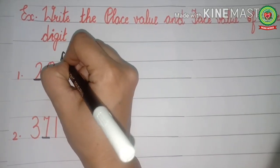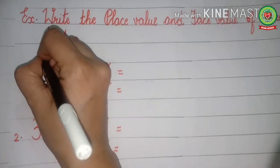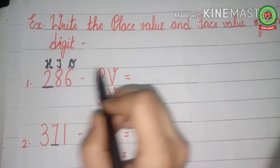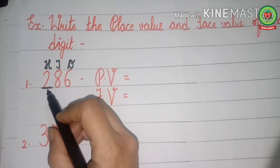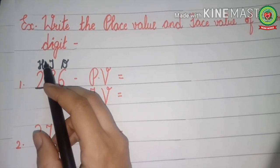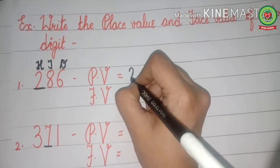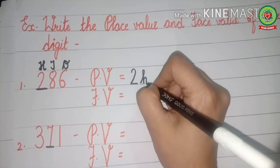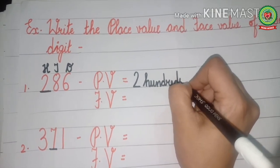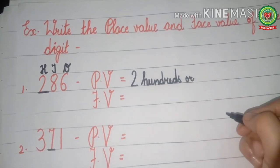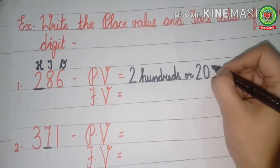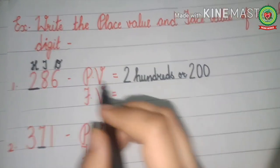PV means place value. First we will write the place value of 2. What is written above 2? Hundreds. So the place of 2 is the hundreds place. We write: two hundreds. Spell 'hundreds' with me — H-U-N-D-R-E-D-S, hundreds. Hundreds has two zeros, so we write 2 followed by two zeros: 200.